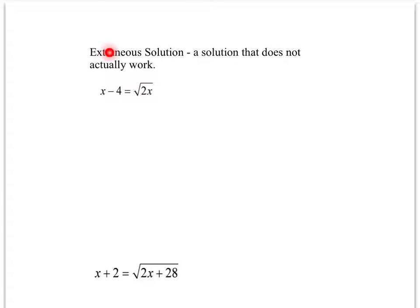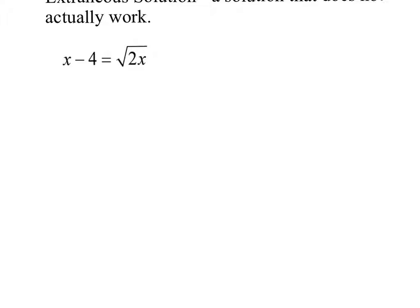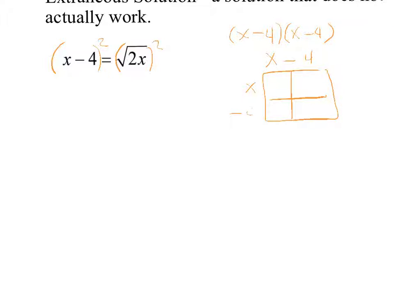Extraneous solution — this is when you get an answer but it doesn't actually work. The square root is already by itself, so I square both sides. On the right side, x minus 4 squared means x minus 4 times x minus 4 — you can't distribute the squared because of that minus sign. Using FOIL: x squared minus 4x minus 4x plus 16, which gives x squared minus 8x plus 16. That equals 2x on the other side, so moving 2x over gives a quadratic to solve.